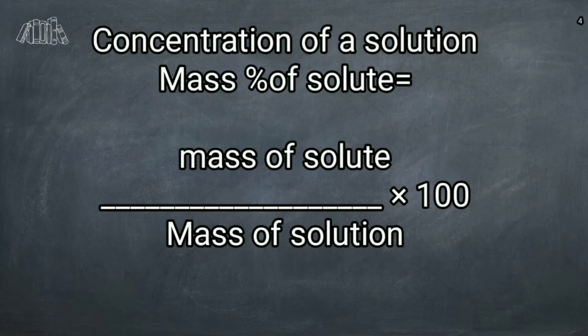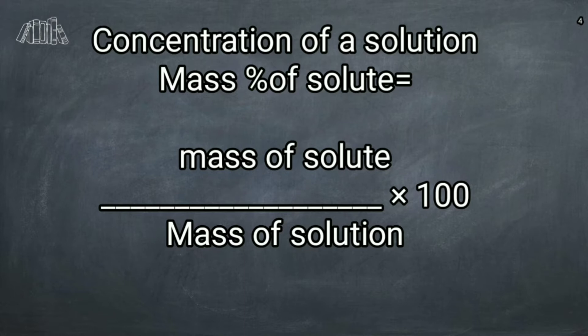In the last class we ended with the concentration of the solution. When solute and solvent combine together we get a solution. If the amount of solute present in that solution is less, those are said to be dilute solutions. If the amount of solute present is more, those are said to be concentrated solutions. There are many ways for expressing the concentration of a solution.